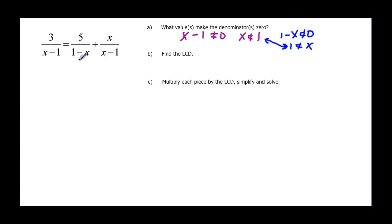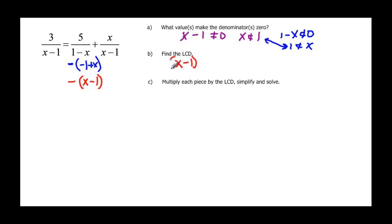We talked about these earlier when we discussed rational functions. We can actually factor one minus x by taking out a negative, making it negative one times x minus one. Or you can write it as negative one times x minus one — the signs are the same on both terms. Now we can see that many denominators have x minus one in them, so x minus one is part of our least common denominator. But we also have to consider the negative, so our least common denominator is negative one times x minus one.